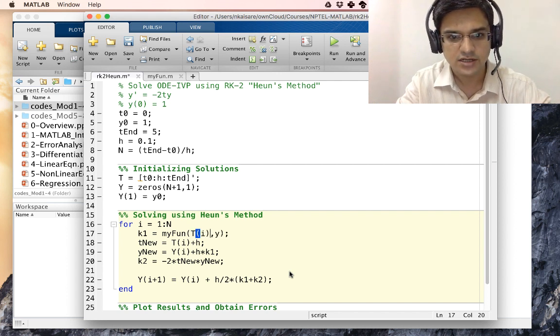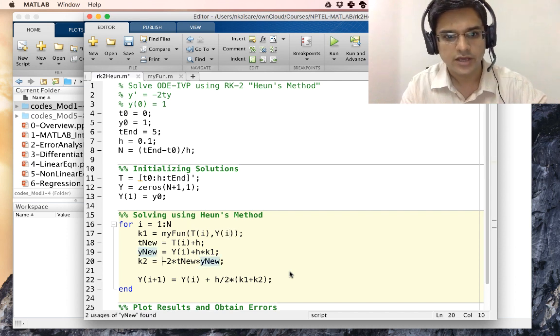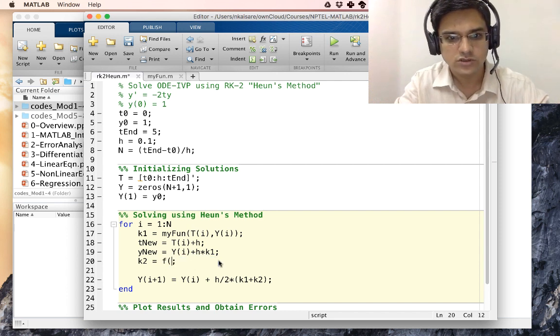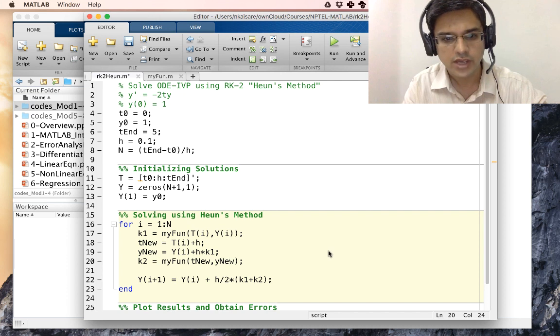So k2 is also nothing but f of t nu comma y nu. The function f is obtained through the same function MYFUN. And that should complete our problem. Now we probably do not need this additional t nu comma y nu over here.